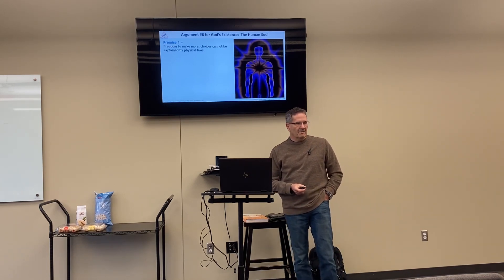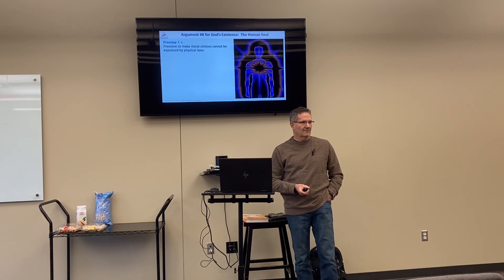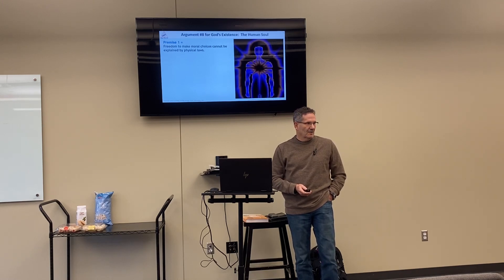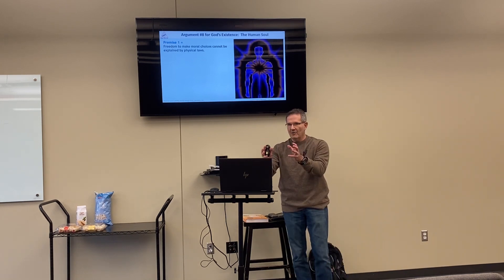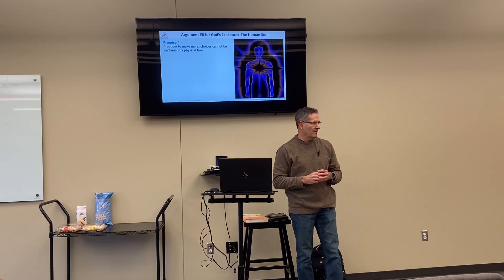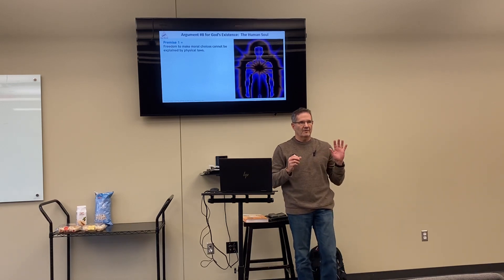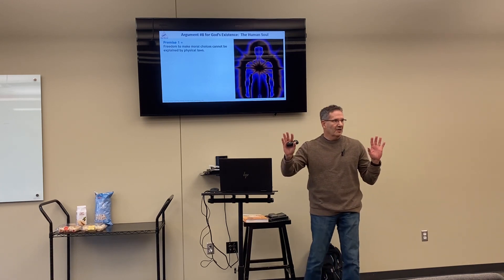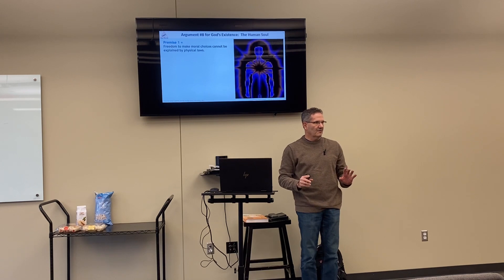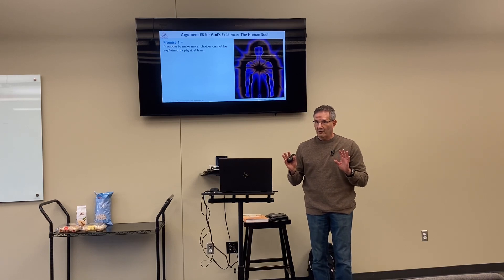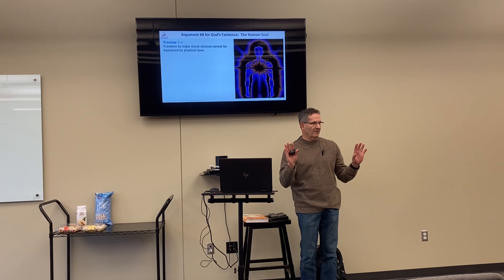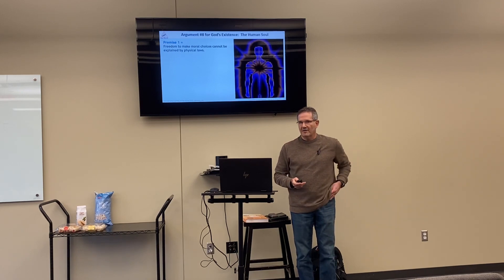Freedom to make moral choices cannot be explained by physical laws. Your freedom to decide what's right and wrong isn't based on a physical law like gravity or the strong nuclear force. There's no equation mathematically or physically for you deciding what's right or wrong. That's why we talked in book one about subjectivism versus objectivism — you can have two people in a room, one says abortion is fine, the other says it's murder, because there is no physical law. Otherwise we'd be determined and we'd all decide together with one common way of looking at morality. So you can't explain it by physical laws.